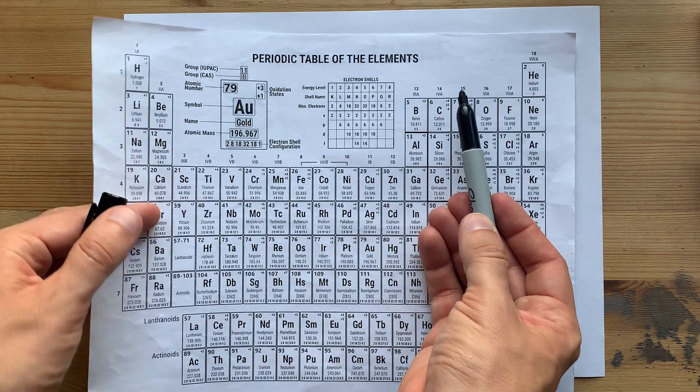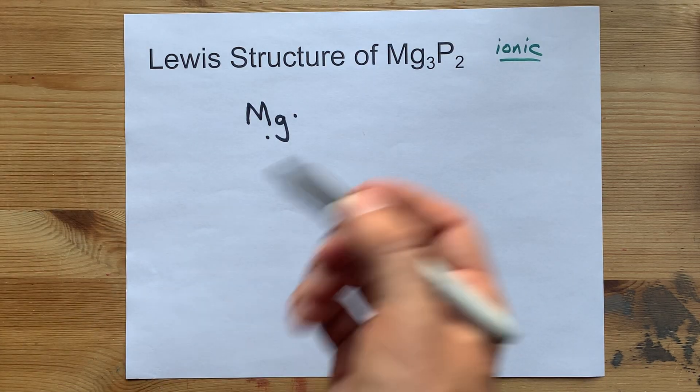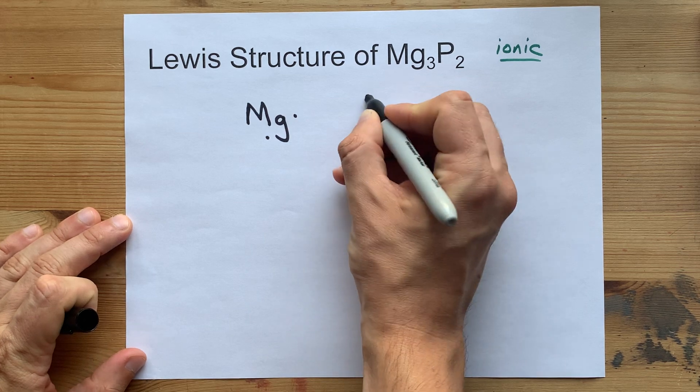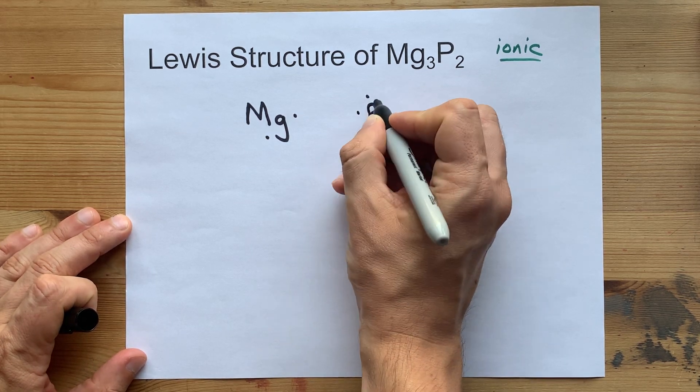Phosphorus is in group 15, so it brings 5 valence electrons each. 1, 2, 3, 4, 5.